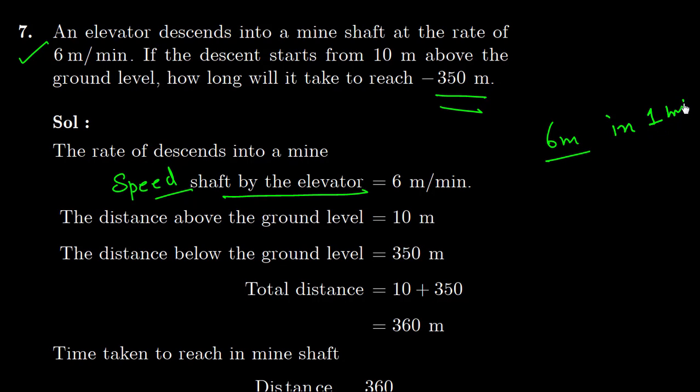In 1 minute, speed of the shaft is 6 m per minute. The distance above the ground level is 10 m. It starts from above and goes down to 350 below ground level. So total distance from this point to that point is 350 plus 10, which equals 360.